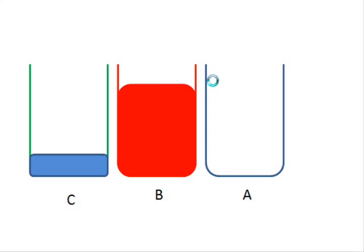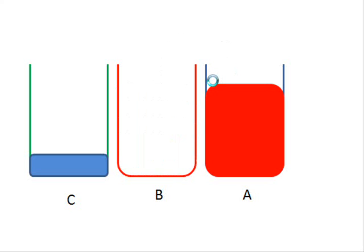Now you will pour the content of B into A and this means B now is empty. Finally you will pour the content of C into B so you get them swapped like this.